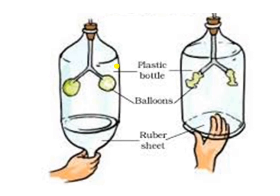Take a clean white plastic bottle and get a Y-shaped glass or plastic tube. Make a hole in the lid so that the tube may pass through it. Then cap the bottle and seal it to make it airtight. Tie a thin rubber or plastic sheet to the open base of the bottle using a large rubber band.